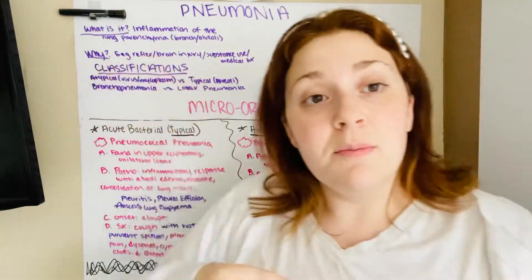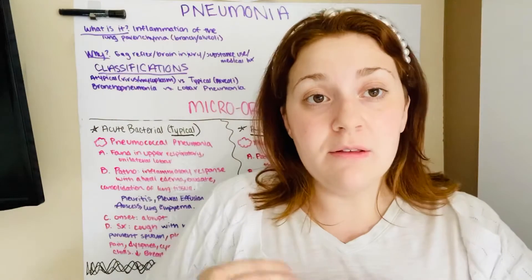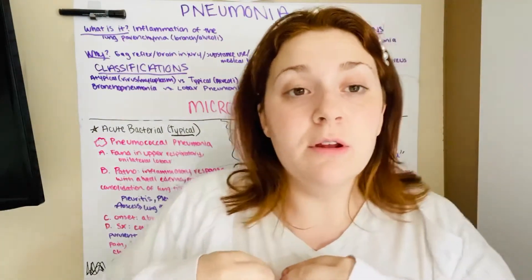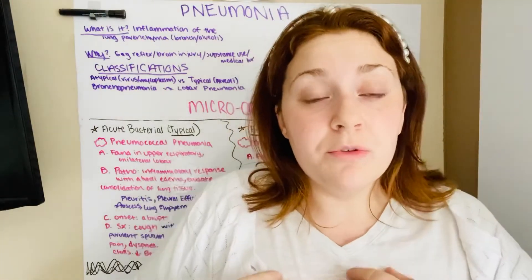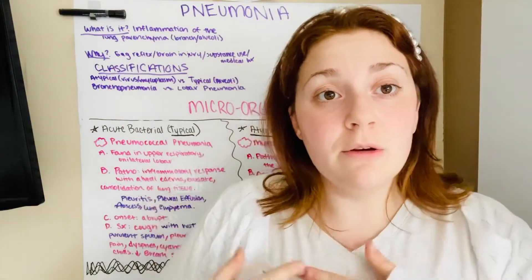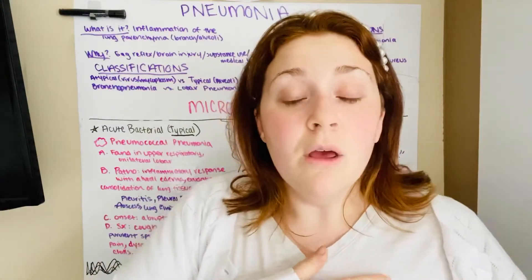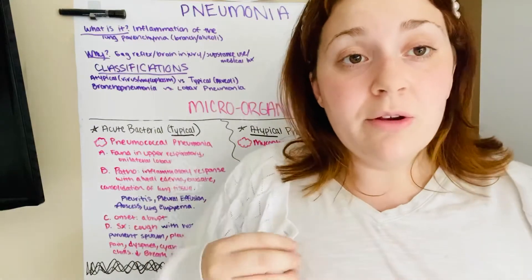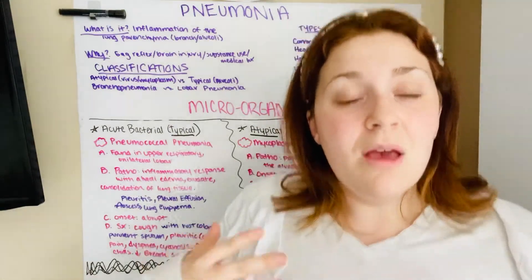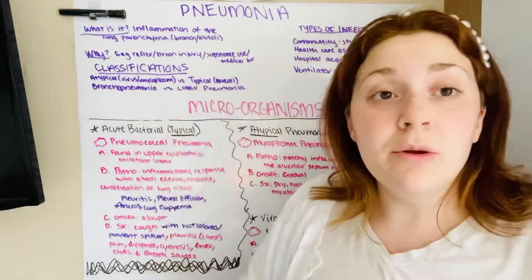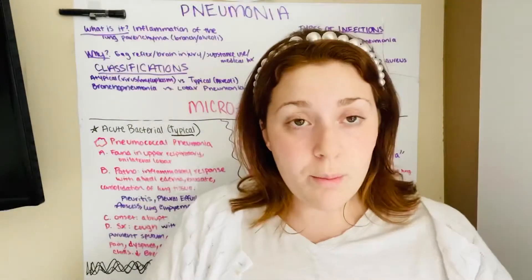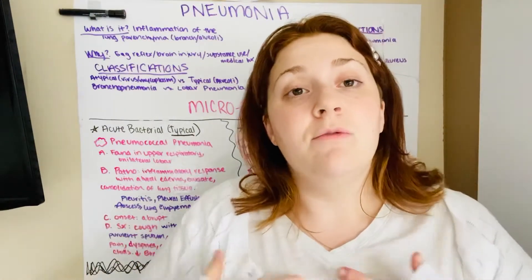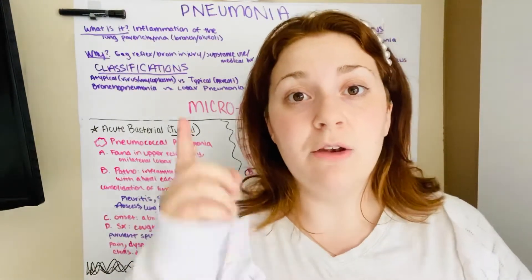Bronchopneumonia — what is that? It is patchy pieces of infection that are going to be in multiple lobes. Remember, on the left side you have two lobes in your lung, on the right side you have three. With patchy, you might have it in maybe two lobes on the left — just little pieces in multiple lobes. Whereas with lobar pneumonia, it's the whole lobe — maybe the left upper lobe, the whole thing has infection, usually confined to one lobe.